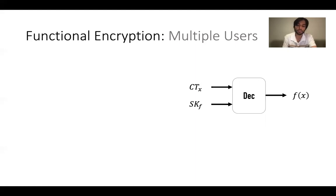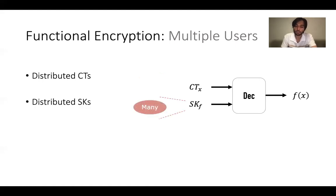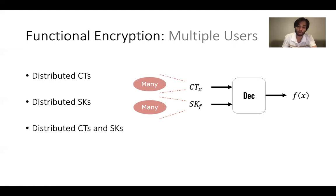Some of you might be wondering what I mean by multi-user model. Wasn't FE already defined for multiple users? Even in my simple example I had three parties: Alice, Bob, and Charlie. While that is true, despite the incredible expressiveness of FE, decryption still takes as input a single ciphertext and secret key pair. The question becomes: what happens if there are multiple different data sources, multiple independent key holders, or a mixture of both — multiple keys, multiple ciphertexts — and we want to learn a computation about all of them at the same time?